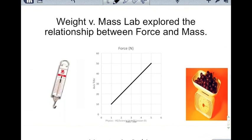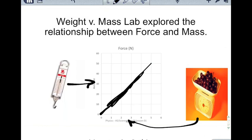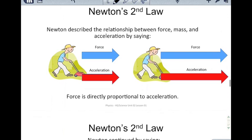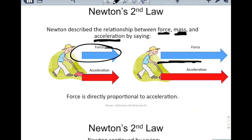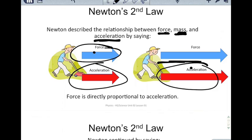In the weight versus mass lab, we explored the relationship between force and mass. We put force and mass on a graph and got the same number every time — that number was g. We can use this to introduce Newton's second law, which says there is a relationship between force, mass, and acceleration. The more force you have — going from a small force to a bigger force — the more force results in an equal increase in acceleration. In other words, force is directly proportional to acceleration: if you double the force, you double the acceleration; if you halve the force, you halve the acceleration.